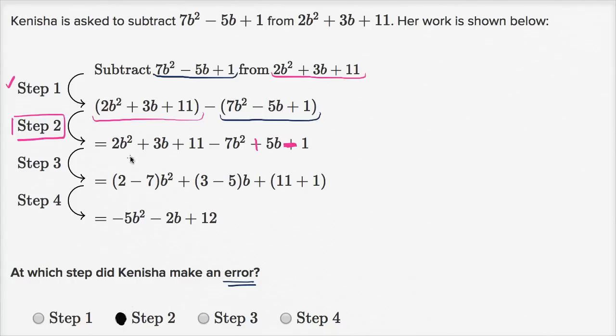From there it seems reasonable. She is subtracting the coefficients on the b squared terms. So 2b squared minus 7b squared. It gets us this right over there. Then on the b terms, you have 3b and then, let's see.